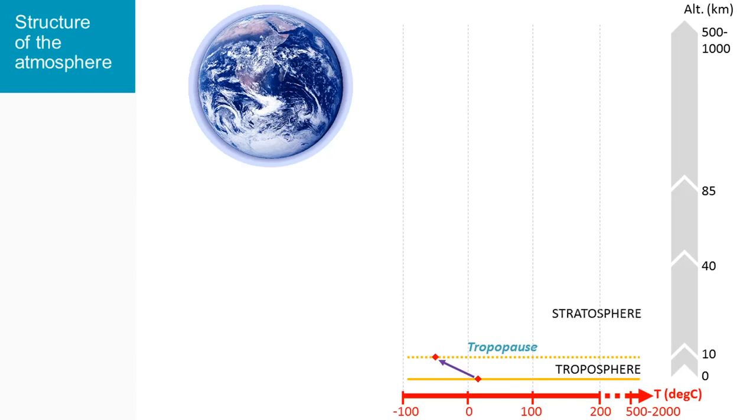Above starts the stratosphere, which in its lower part shows an almost constant temperature around minus 50 before it rises again near zero degrees C at the stratopause.